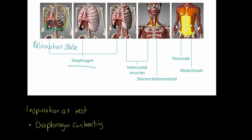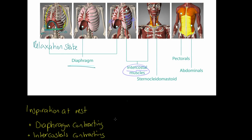We also have muscles called intercostal muscles, situated between the ribs — "inter" meaning between and "costa" meaning rib. When the intercostals contract, they pull upwards, lifting the ribs up. So during inspiration at rest, the intercostals contract, lift the ribs up, increase the space inside the thoracic cavity, decrease the pressure, and air rushes in. So for inspiration at rest: the diaphragm and the intercostal muscles both contract.